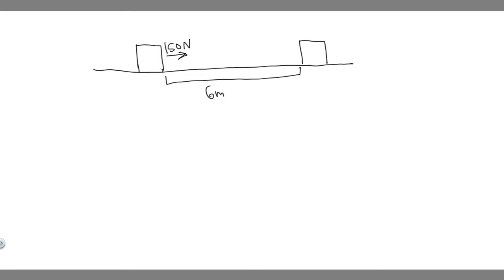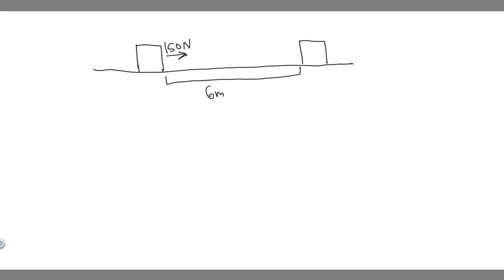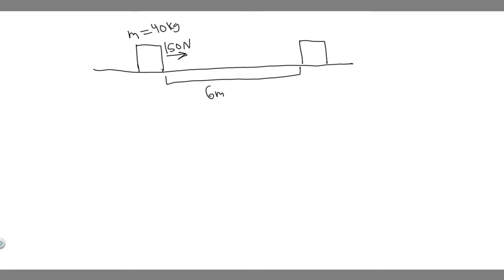So we're solving for two different things here, but let's just go ahead and draw what's going on. We have this crate, and the mass of this crate is going to be equal to 40 kilograms. There's going to be some force pushing it this way, and it's going to travel 6 meters. Let's go ahead and start with A.